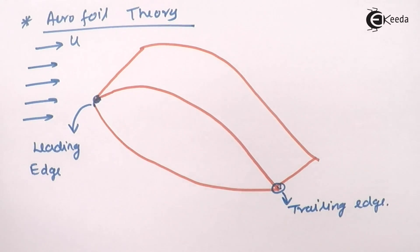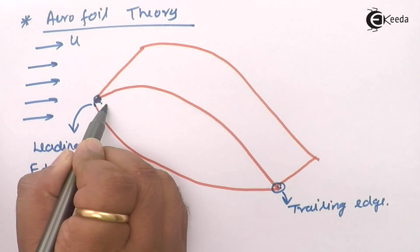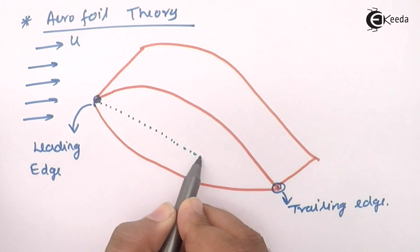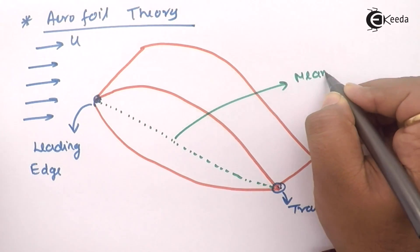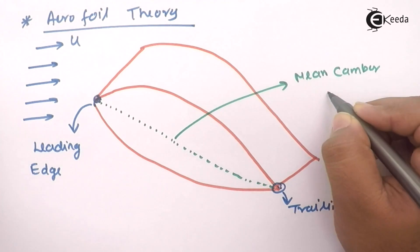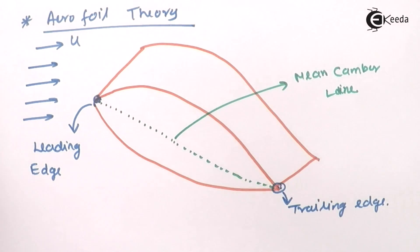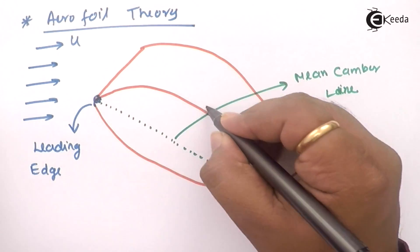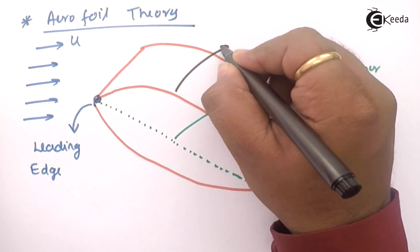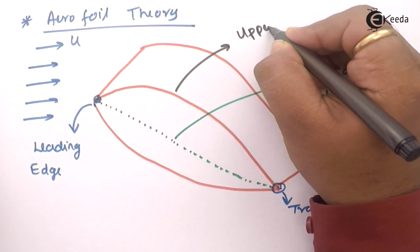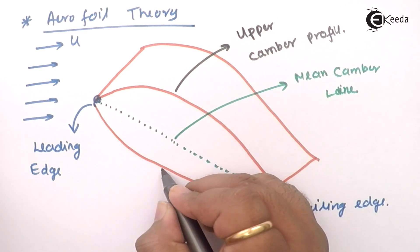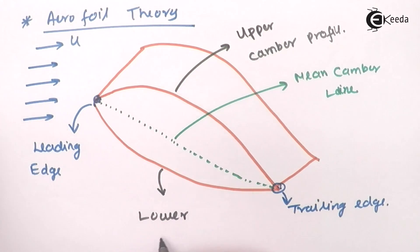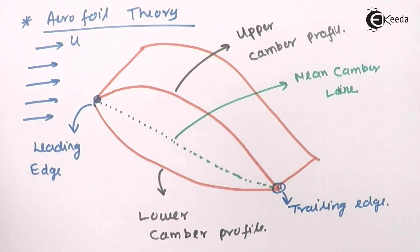The rear part of the aerofoil is called the trailing edge. Now, the line joining the midpoints of the profile with the trailing edge is called the mean camber line. Above this mean camber line we can see the upper part of the aerofoil, which is called the upper camber profile.